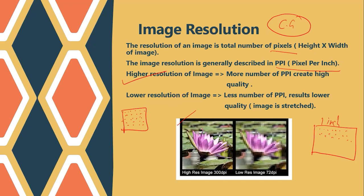For low resolution images, there are fewer pixels per inch. In the same one-inch space, if there are fewer pixels, a large gap exists between them. That gap means low pixel density, which indicates lower quality — the image looks like a stretched image. The first image has higher resolution because there are more pixels per inch and the pixel density is high. In the second image, fewer pixels per inch means the image is stretched. Whenever you zoom an image, the pixels spread and the image quality decreases.